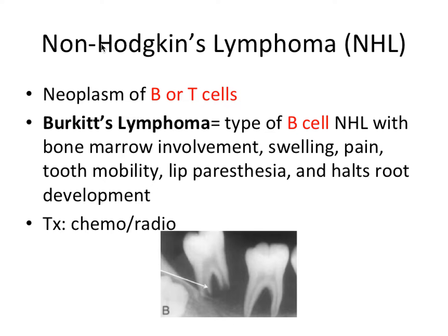Next, we have non-Hodgkin's lymphoma, or NHL, which is a neoplasm of either B or T cells. Burkitt's lymphoma is a specific type of non-Hodgkin's lymphoma — remember B for Burkitt's because it's a B cell lymphoma. Its signs and symptoms include bone marrow involvement, swelling, pain, tooth mobility, and lip paresthesia, which is a pins-and-needles sensation. It also halts root development, which we can see in the x-ray — the stunted roots are the consequence of this lymphoma halting molar root development.